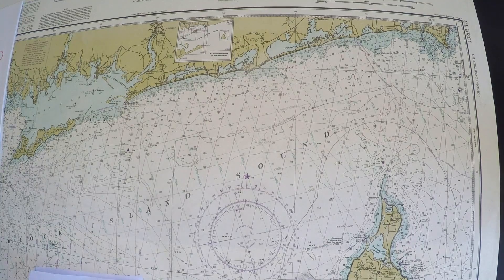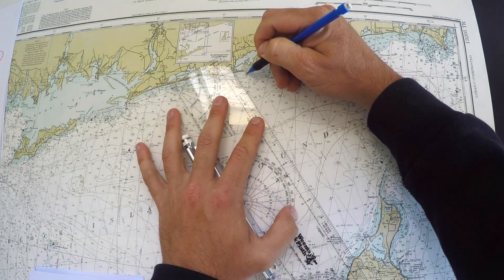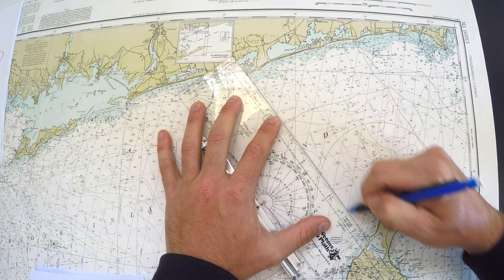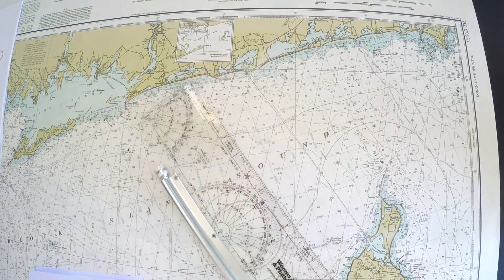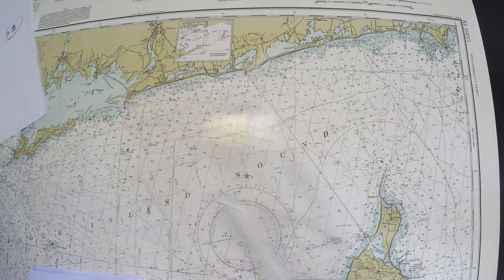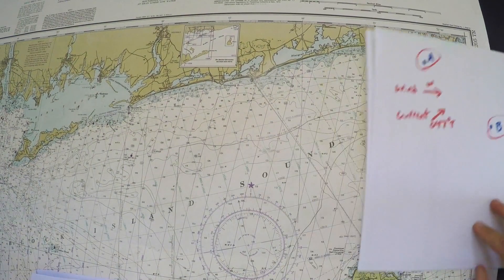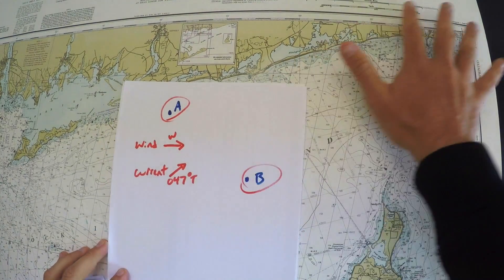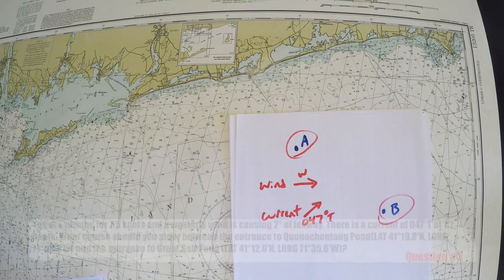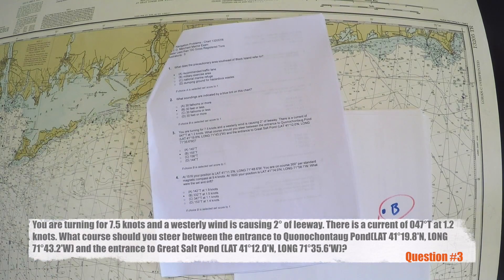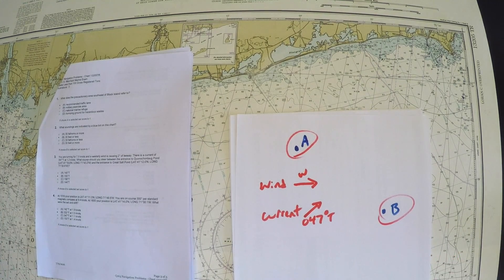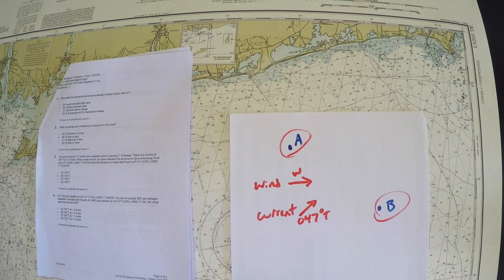With my points plotted, I use the Weems plotter to draw a line directly between them — that's the course I want to make good from A to B. However, the wind and current will affect us. Solving for the wind is fairly straightforward: the problem says leeway is two degrees, so I just point two degrees up into the wind. The current is more challenging and requires a vector solution.